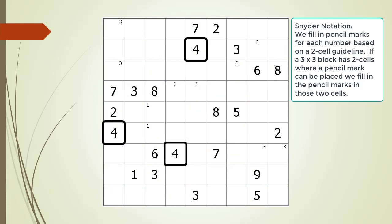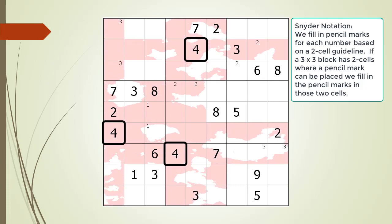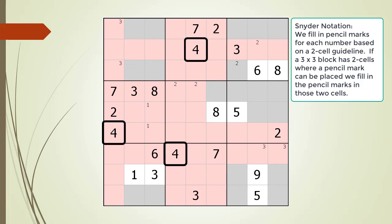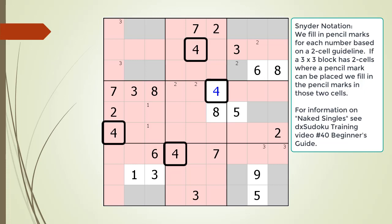The number 4 is next. All the cells having a 4 as a given or a value are now outlined in black. Based on the cells outlined, all the cells that cannot have 4 as a pencil mark are highlighted in red, and all the cells that can have a 4 are highlighted in gray. Since there is only one gray cell in block 5, this is essentially a naked single. We choose the value 4 for cell 4,6 and update our cell coloring. For information on naked singles, see DX Sudoku training video number 40.